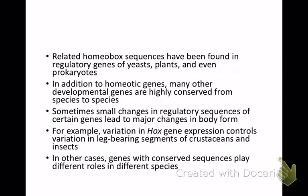Homeobox sequences have been found in fungi and plants in addition to animals, and the duplication of these genes has allowed diversification in when and where the Hox genes can be expressed.